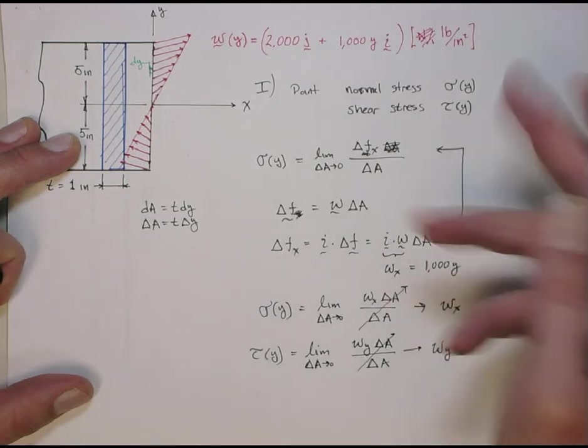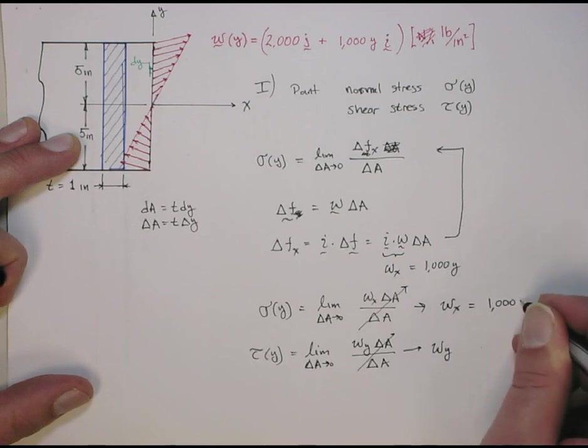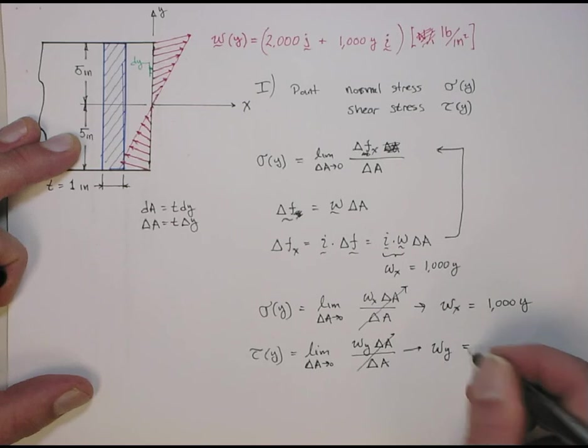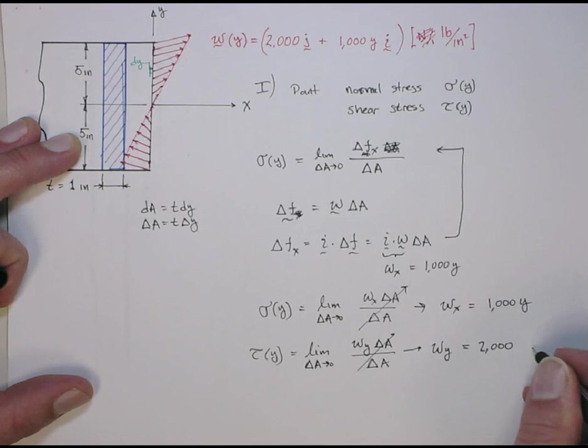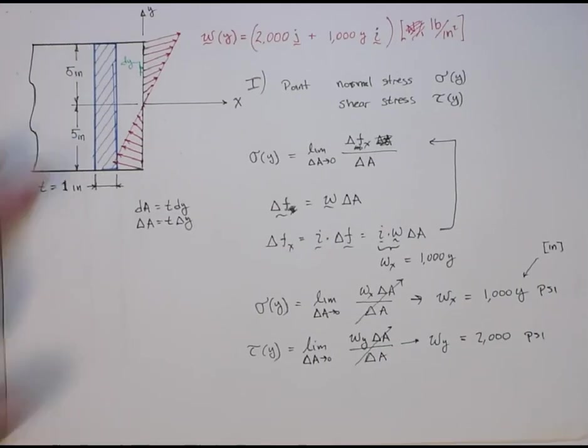So, for this particular distribution, this becomes the function of position, 1,000 times y. And this one is the j component that's just a constant 2,000. And these are all going to be in psi, P-S-I, assuming that I put in for units of this for y inches.